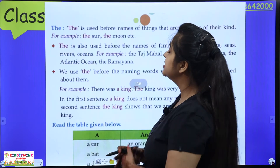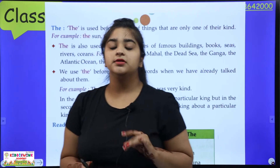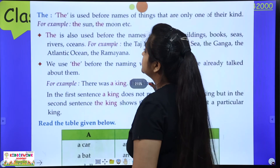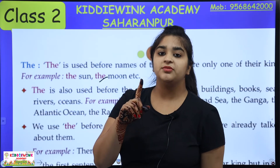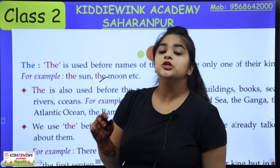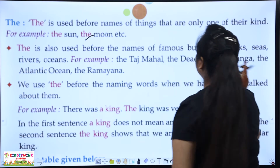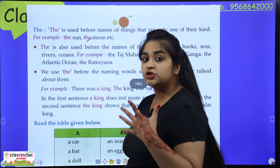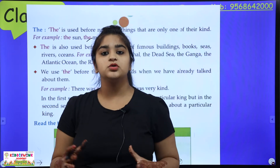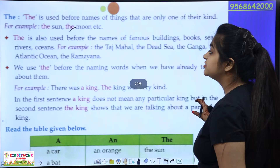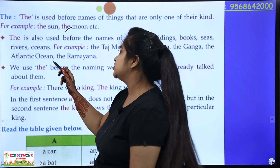THE is used before the names of things that are only one of their kind. The is also used before the names of famous buildings, famous books, famous seas, rivers, and oceans. For example: the Taj Mahal, the Dead Sea, the Ganga, the Atlantic Ocean, the Ramayana. Is it clear?